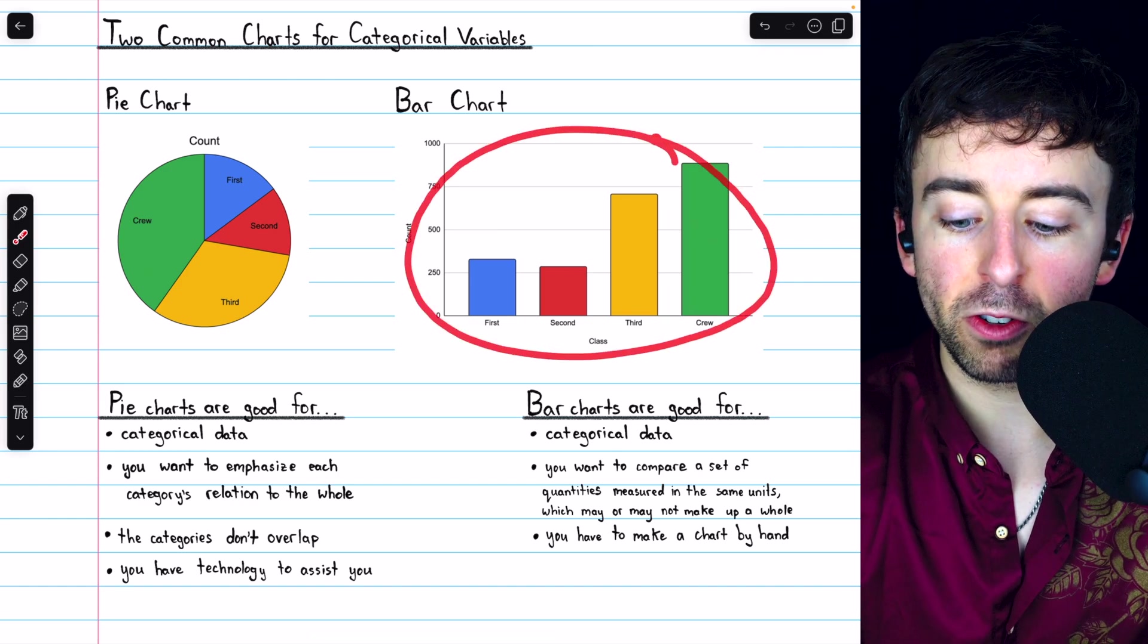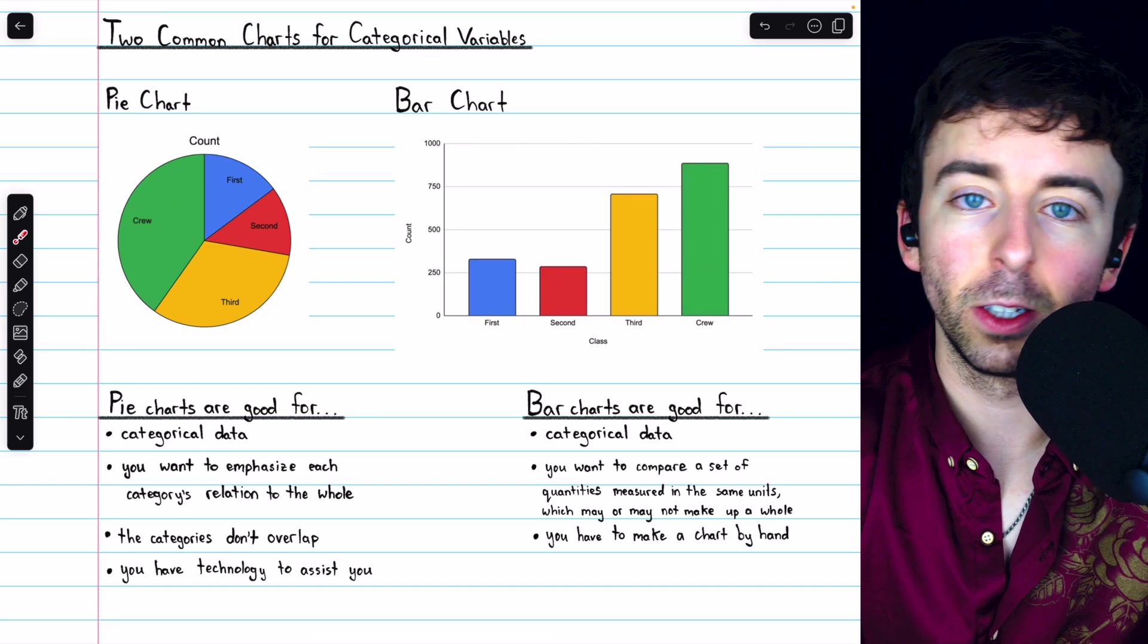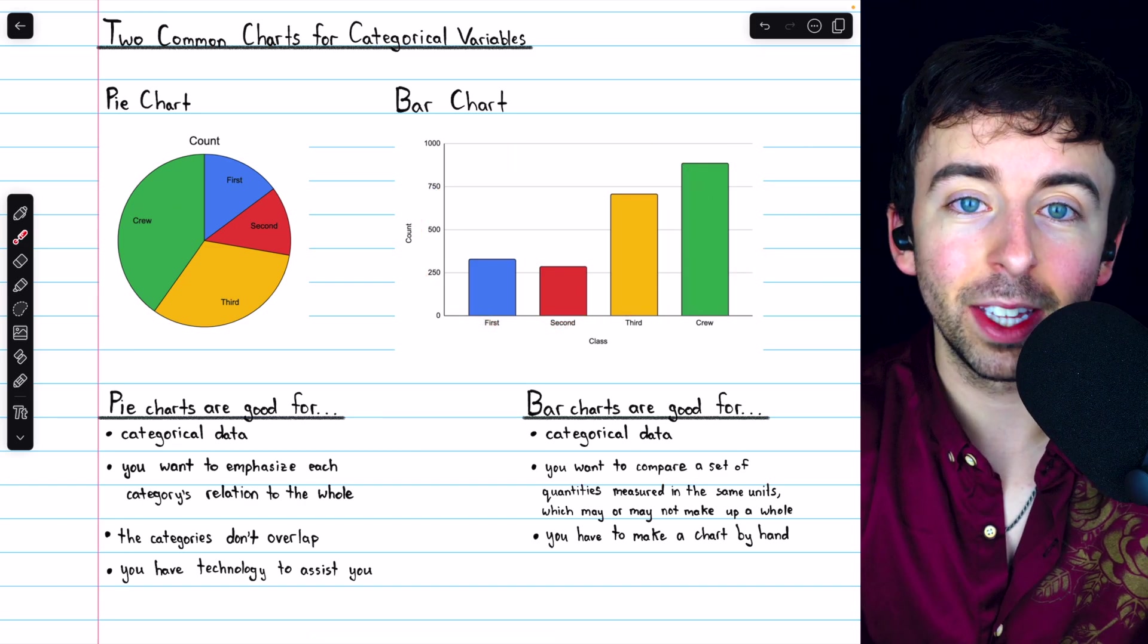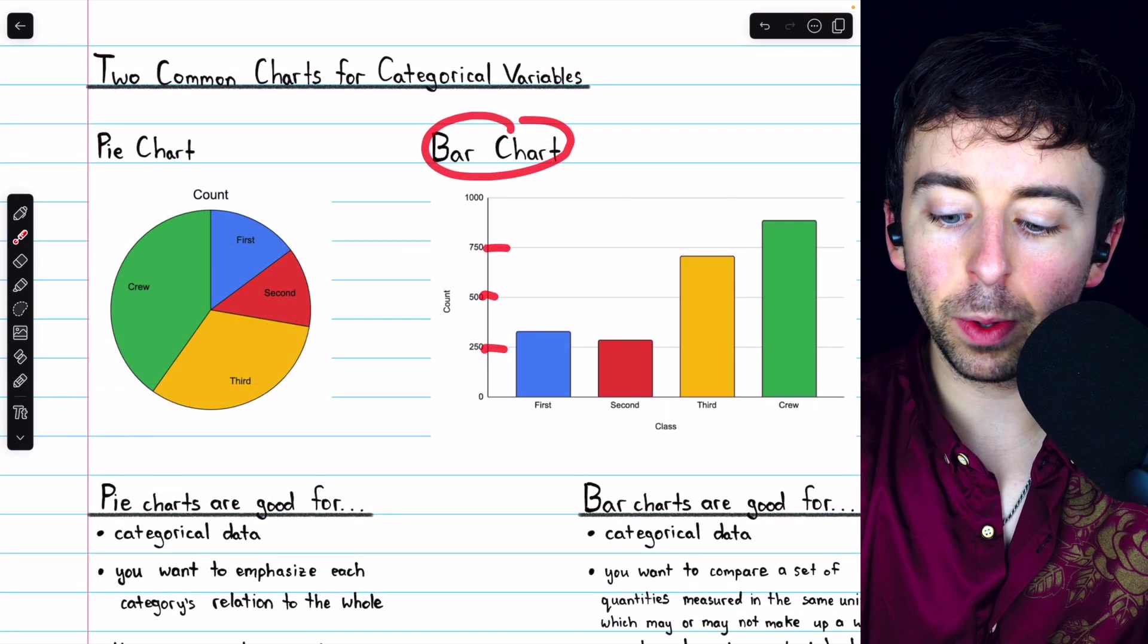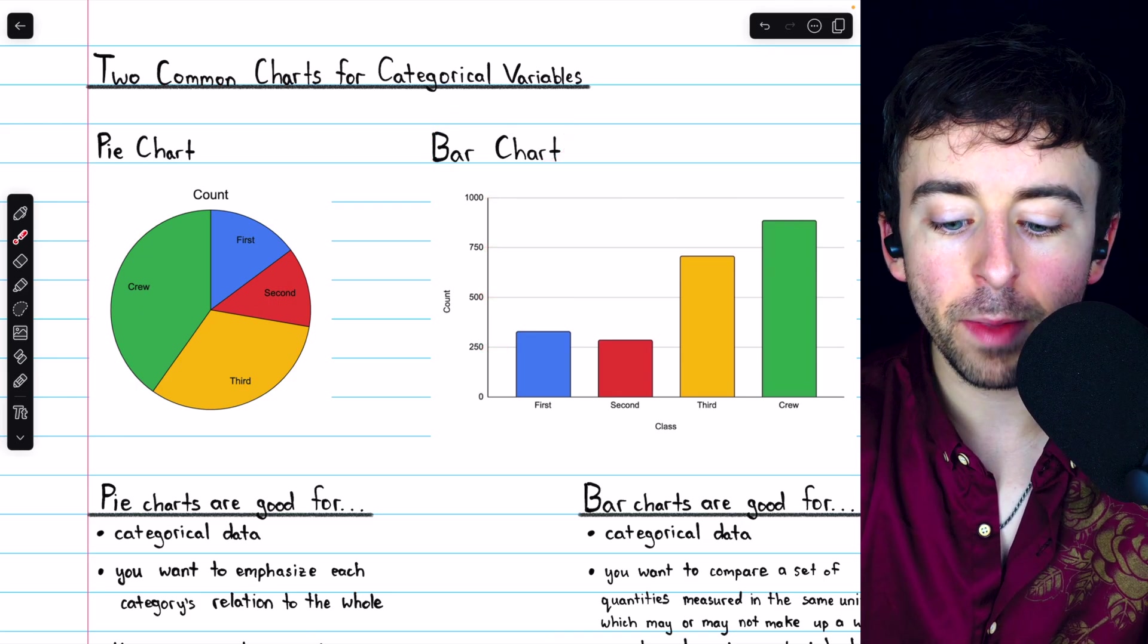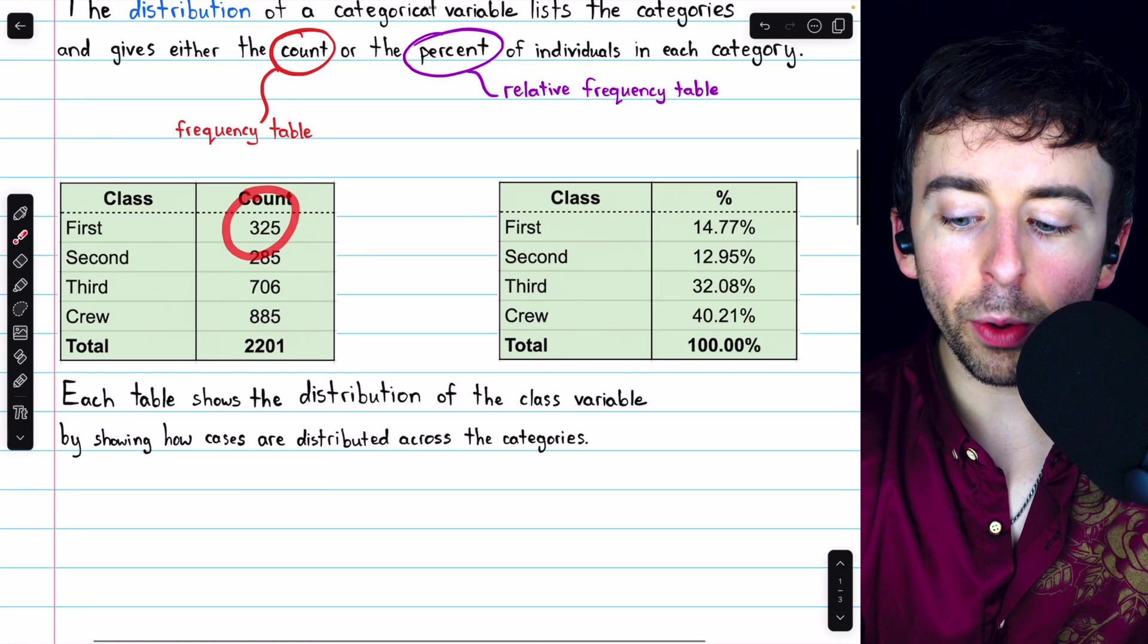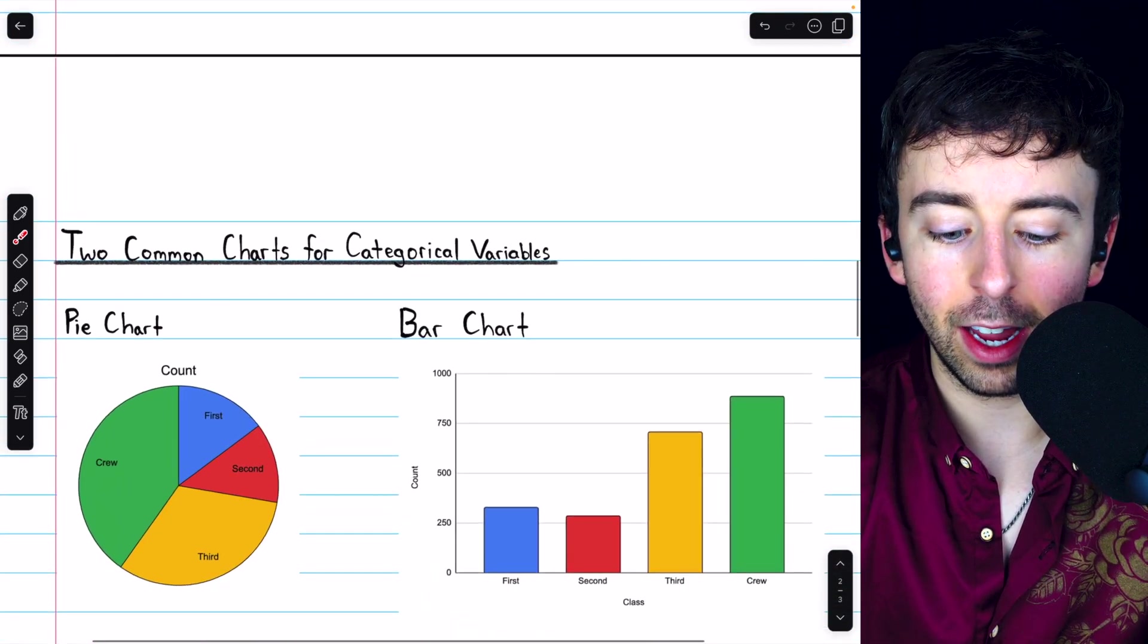It's totally fine if categories have overlap in a bar chart. There's nothing visually about a bar chart that suggests all the categories together make up a single whole. In this case, the categories do, but that's not something that is implied by the bar chart. In the bar chart, you can see that it's the counts of people in each category that are really being displayed. But like we saw before, we can make a table with counts or with relative frequencies. And the same is true about pie charts and bar charts.